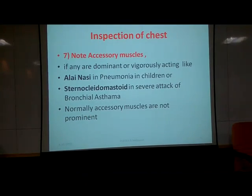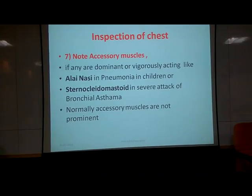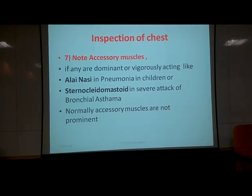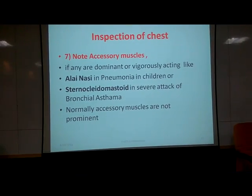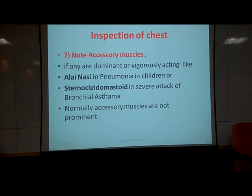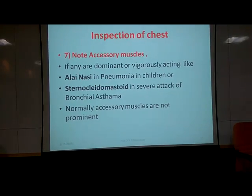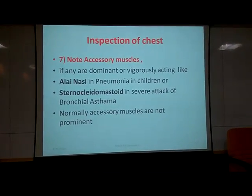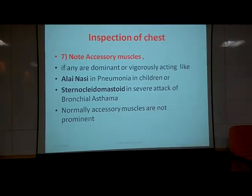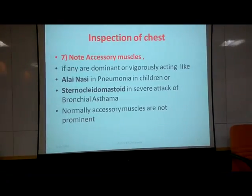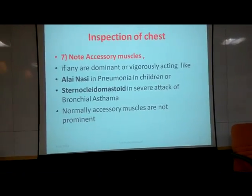Lastly, in this first session, we look at accessory muscles. They are normally not active, but when the patient is severely dyspneic — for example in asthma or pneumonia — in children you will see movement of the alae nasi, the muscles of the nostril. In adult patients with bronchial asthma, you will see movement of the sternocleidomastoid muscle. This ends the first half of our video; we will continue after the demonstration with the second half.